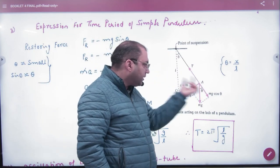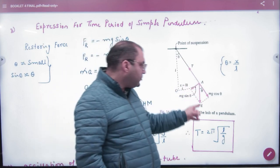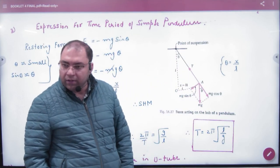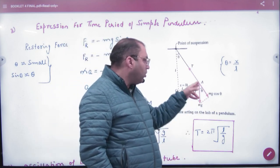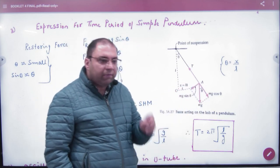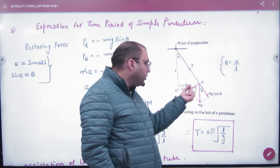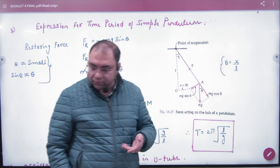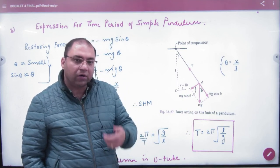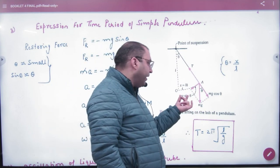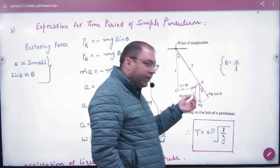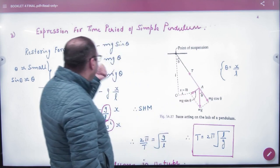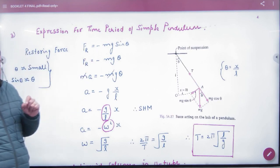Displace the pendulum by angle theta. Its weight is mg. This is theta, and the corresponding angle is also theta. Mg has two components: mg cosθ and mg sinθ. When the pendulum is released from here, it comes back. Which force brings it back? Mg sinθ — the mg sinθ force brings it back.